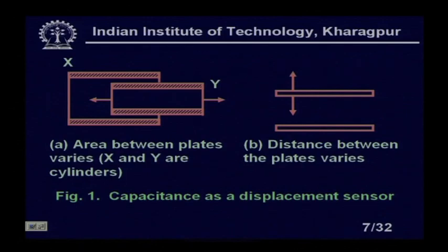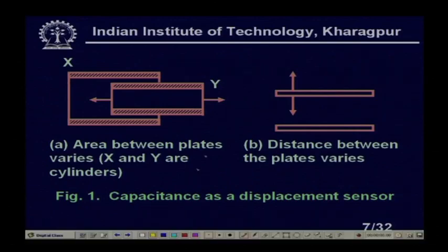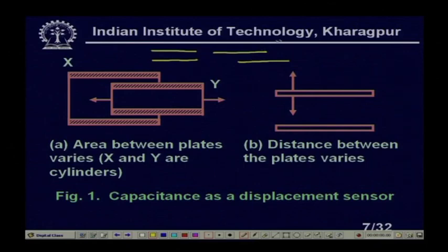Various types of capacitance sensors are shown here as displacement sensors. X and Y are cylinders. X is the fixed plate and Y is the movable plate. If I push Y, the capacitance changes due to the change in overlapping area between the plates. For two parallel plates, if one plate is shifted, the area of cross-section between the plates changes, changing the capacitance, which can then be calibrated in terms of displacement.